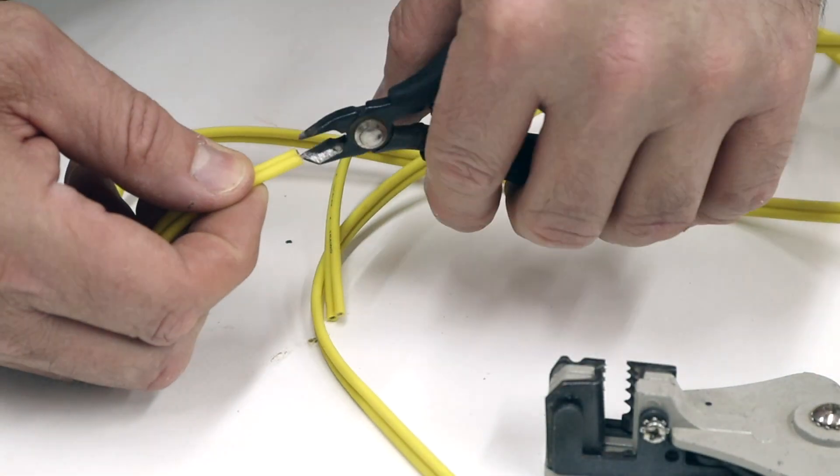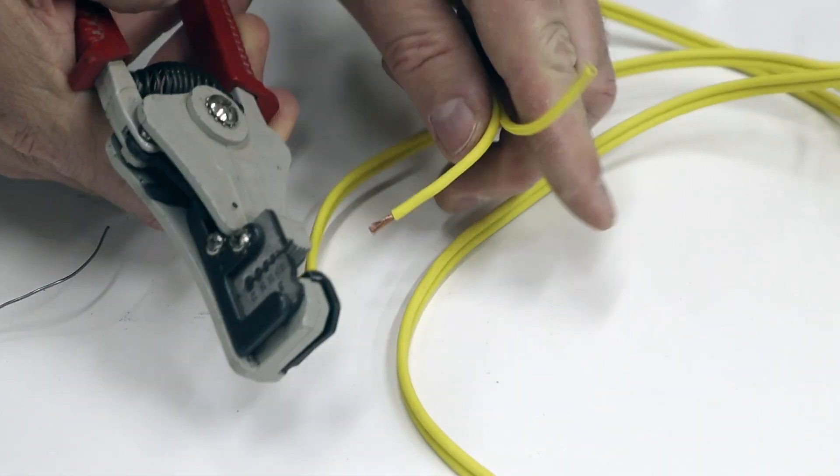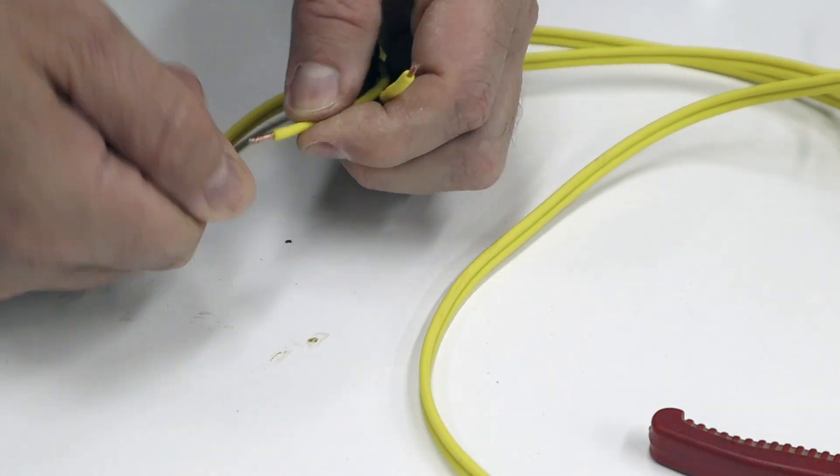Strip and pre-tin the other ends of the wires with solder. These ends will be soldered to the speaker terminals and the binding posts.